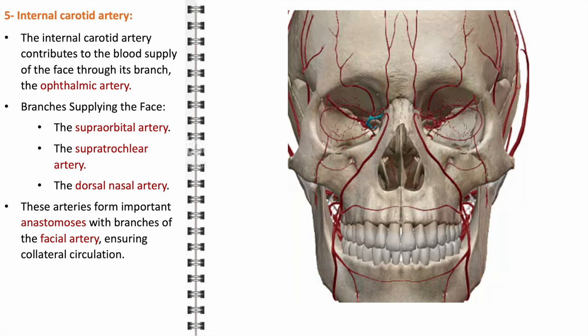These arteries form important anastomotic connections with branches of the facial artery, such as the angular artery. This anastomosis ensures collateral circulation, a crucial aspect in maintaining blood flow to the face, especially in cases where one part of the vascular network is compromised. The dorsal nasal artery is particularly relevant in reconstructive surgeries of the nose and in treating nasal injuries.